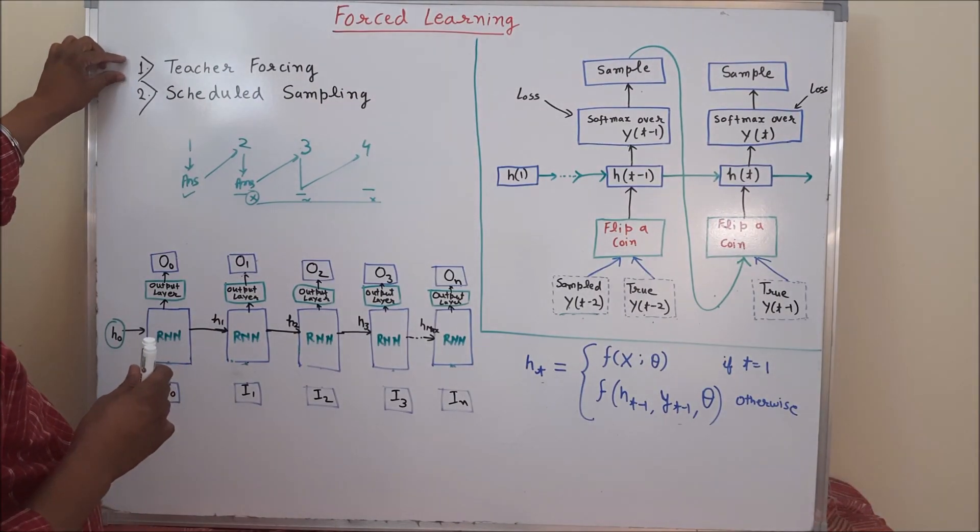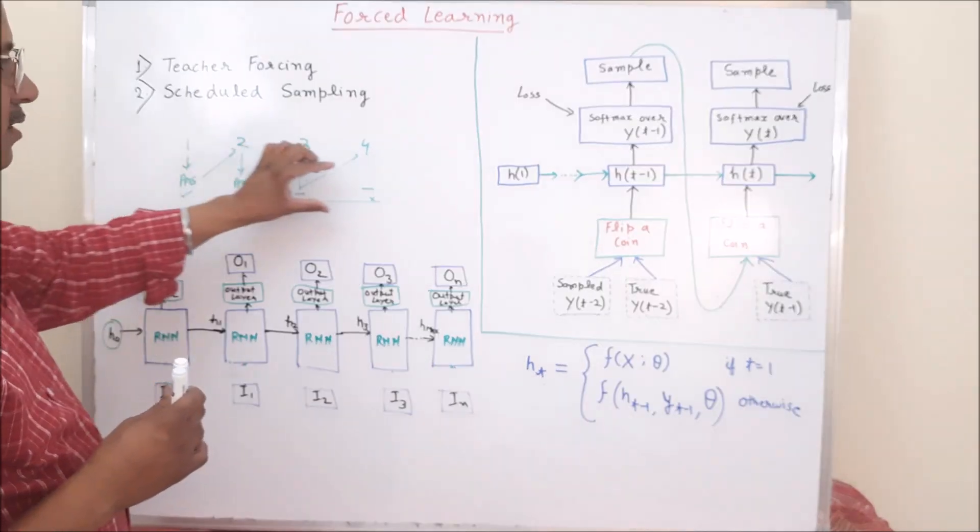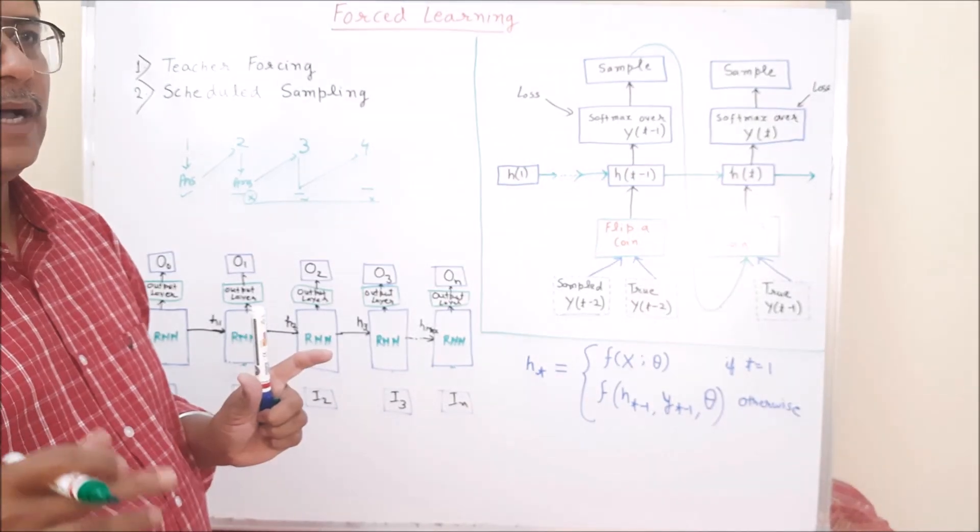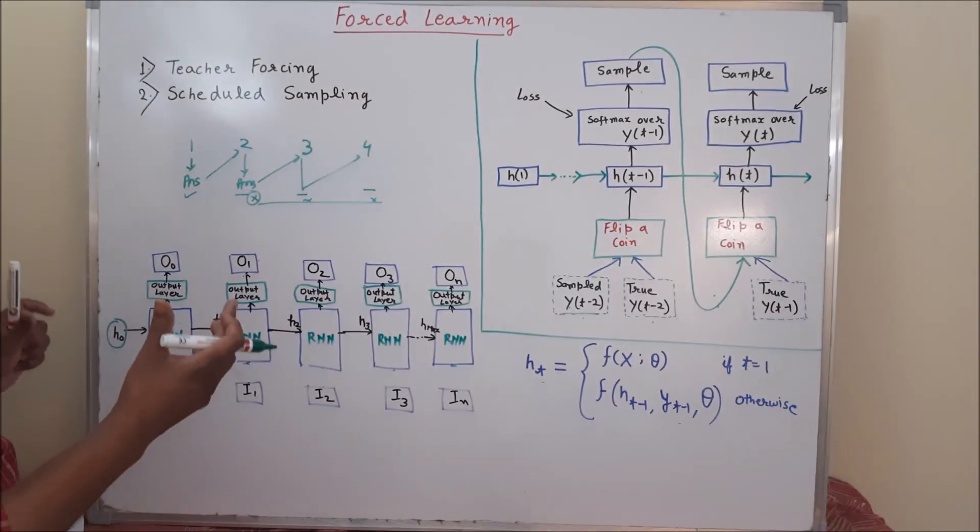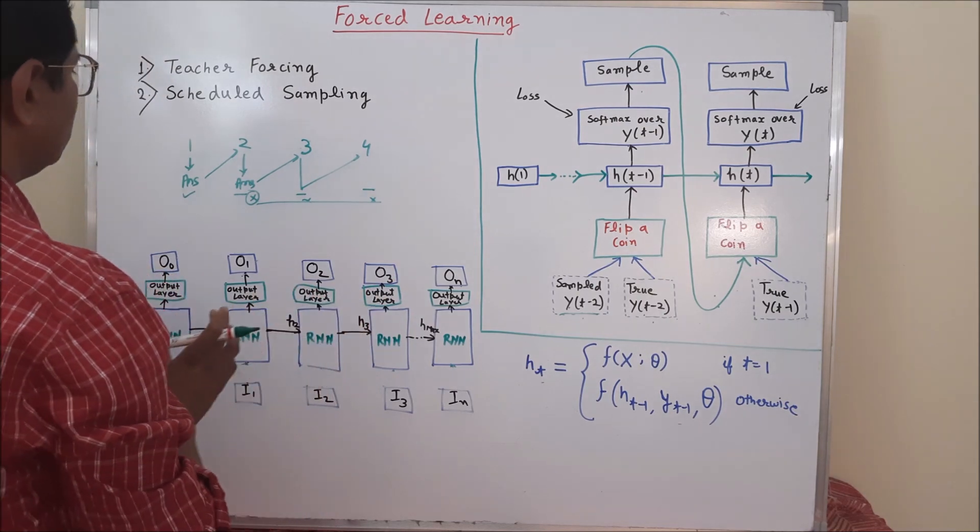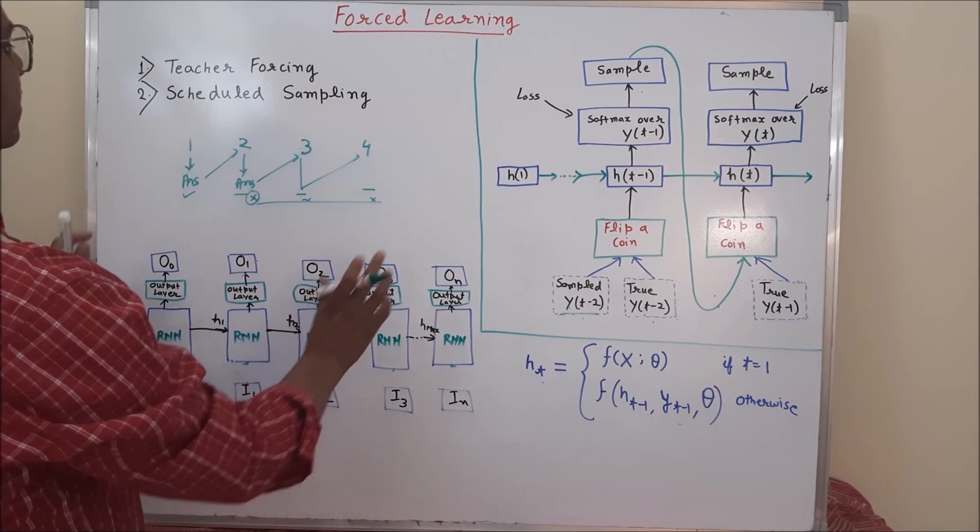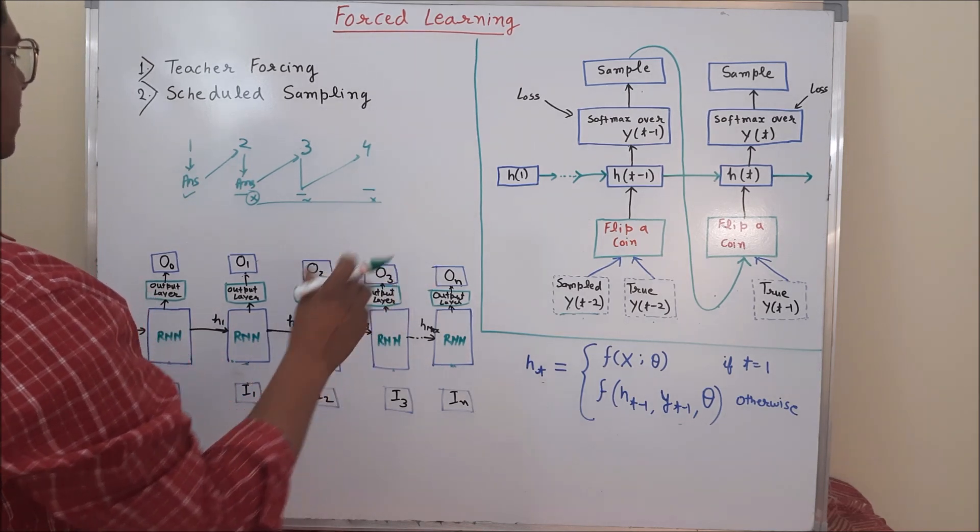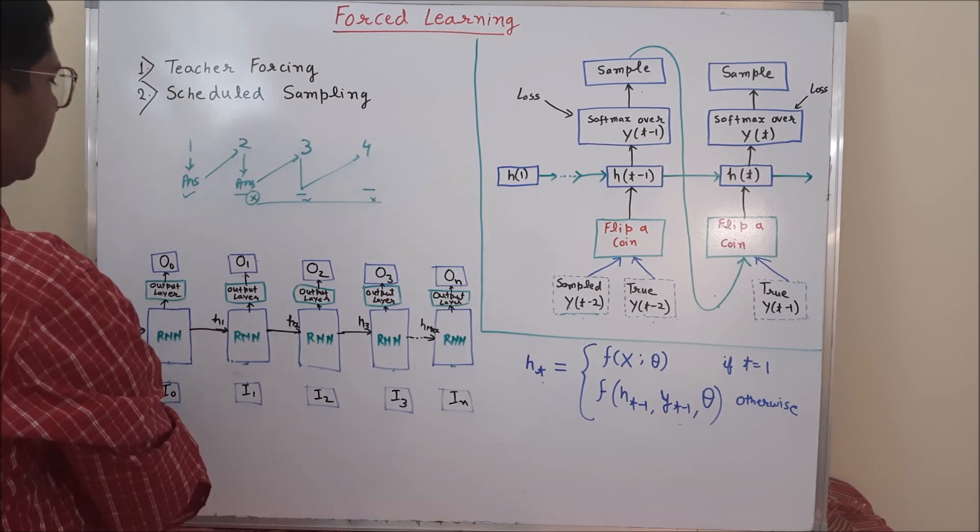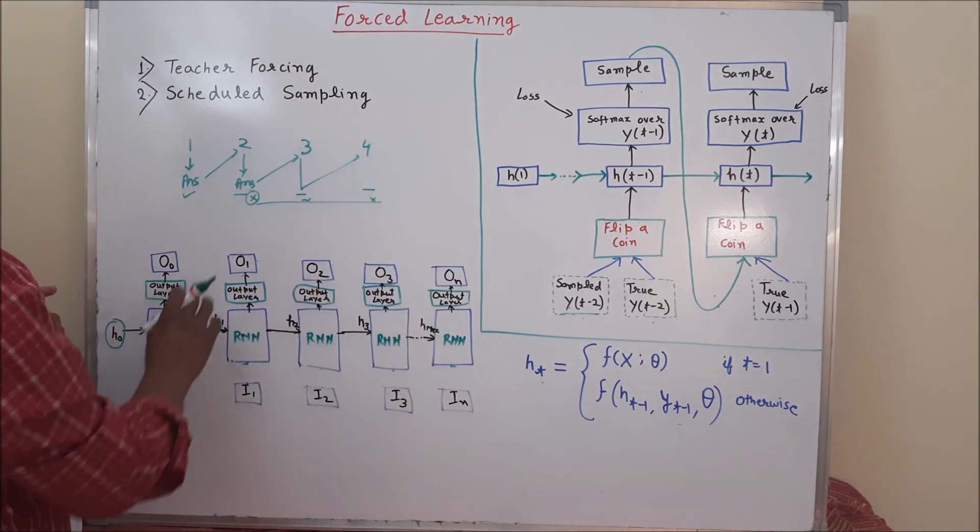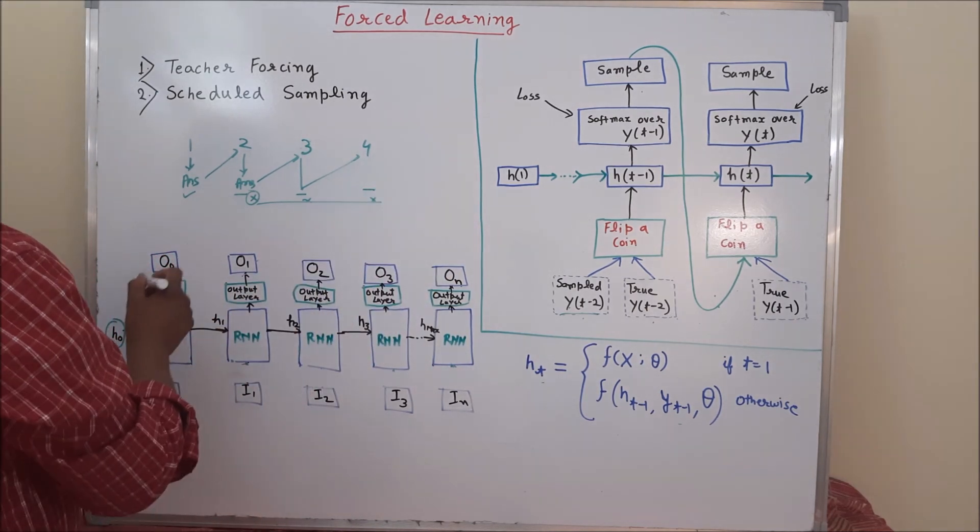Now to understand how teacher forcing is actually working and how it solves such kind of error propagations, I am just assuming that you know the sequence to sequence based model. And suppose you are applying something like machine translation. Like you are using some English input text and translating it to French or so many other languages. Like a sequence to sequence kind of things.